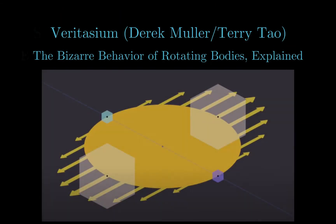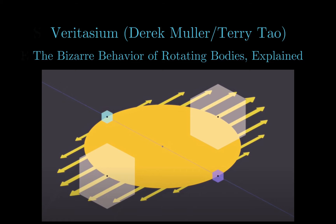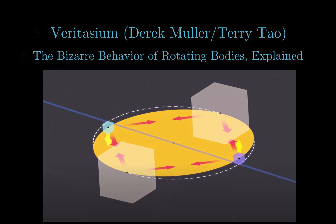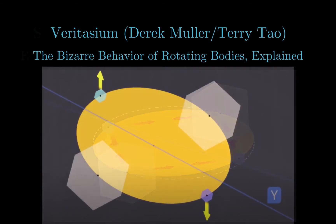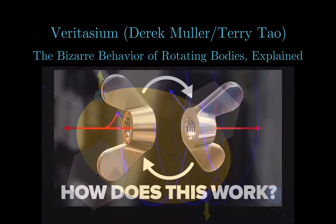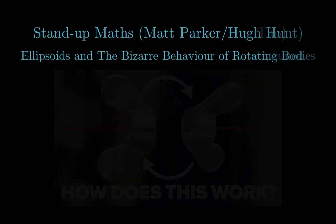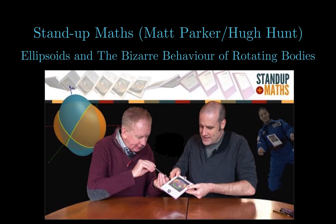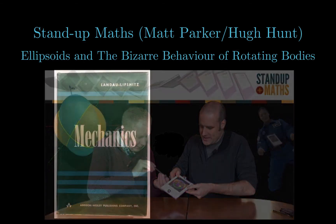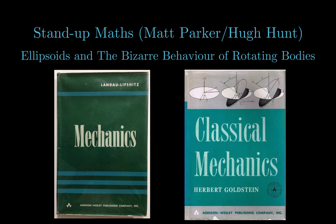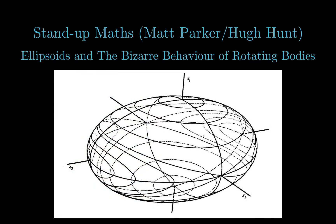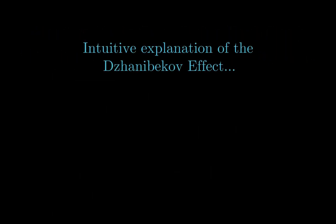The problem I have with Professor Tao's explanation is that it requires you to imagine yourself in a frame of reference rotating about a direction in space that momentarily coincides with the angular velocity of the body, and then to consider the action of centrifugal and Coriolis forces. I prefer to think about physics in terms of inertial frames, where Newton's laws of motion hold and centrifugal and Coriolis forces are fictitious. More recently, Matt Parker released a video on his YouTube channel Stand Up Maths, in which he discussed the Dzhanibekov effect with Hugh Hunt, a Cambridge University engineer. Their explanation is essentially a repeat of the technical arguments found in advanced classical mechanics books such as Landau and Lifshitz or Goldstein, involving an abstract mathematical analysis showing the angular velocity vector must follow the intersection of two ellipsoids. What I would like to present in this video is a fairly simple, intuitive explanation of the Dzhanibekov effect.